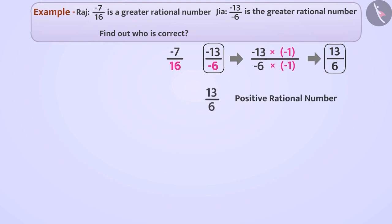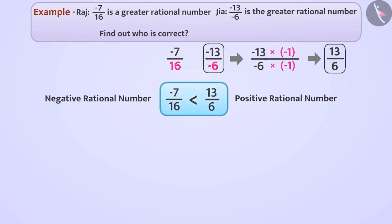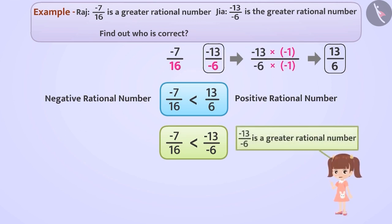Minus 7 by 16 is a negative rational number. Since a positive rational number is always greater than a negative rational number, we can say that 13 by 6 is greater than minus 7 by 16. This means minus 13 by minus 6 is greater than minus 7 by 16. Thus, Jiya's understanding is correct.